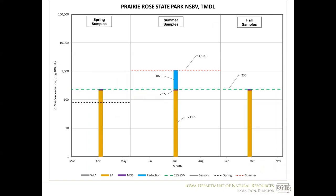For some people it may be more clear in graphical format. We can see our existing loading during the summer months at 1,100, our allowable loading capacity at 235, and the difference — our required reduction — is 865. Our load allocation is 211.5 and our margin of safety is 23.5, and the summation of those two equals 235.